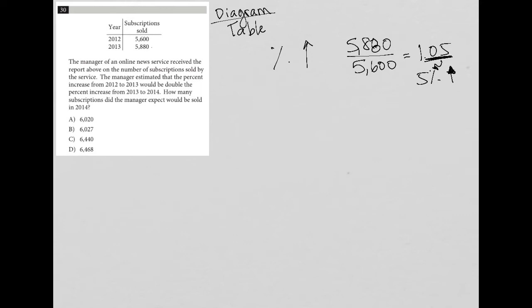So the 5,880 is 5% higher than the 2012 number of 5,600. So the manager estimated that the percent increase from 2012 to 2013, 5%, would be double the percent increase from 2013. So we expect a 2.5% increase from 2013 to 2014.